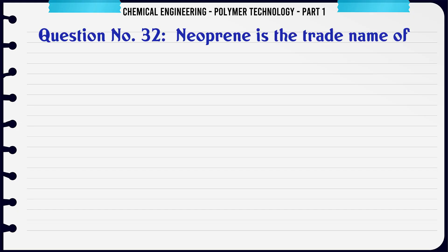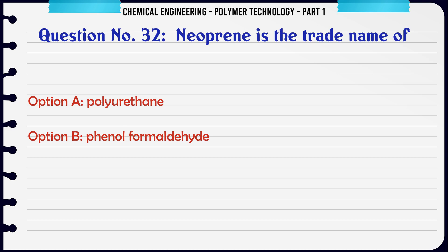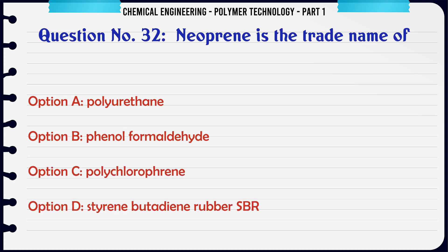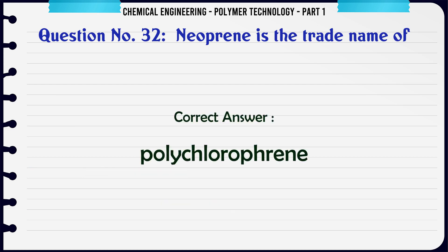Neoprene is the trade name of: A. Polyurethane, B. Phenol formaldehyde, C. Polychloroprene, D. Styrene butadiene rubber (SBR). The correct answer is Polychloroprene.